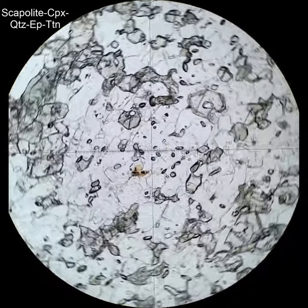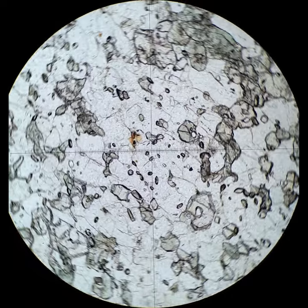Scapolite always catches me by surprise. It occurs in calcosilicate rocks. This is a calcosilicate rock with a bunch of diopside and epidote.